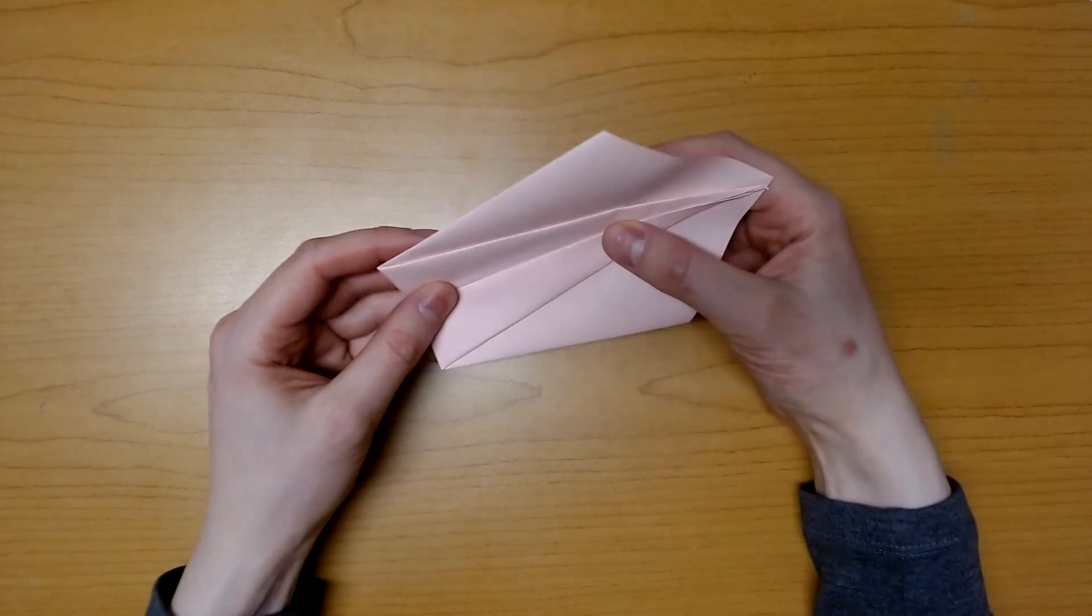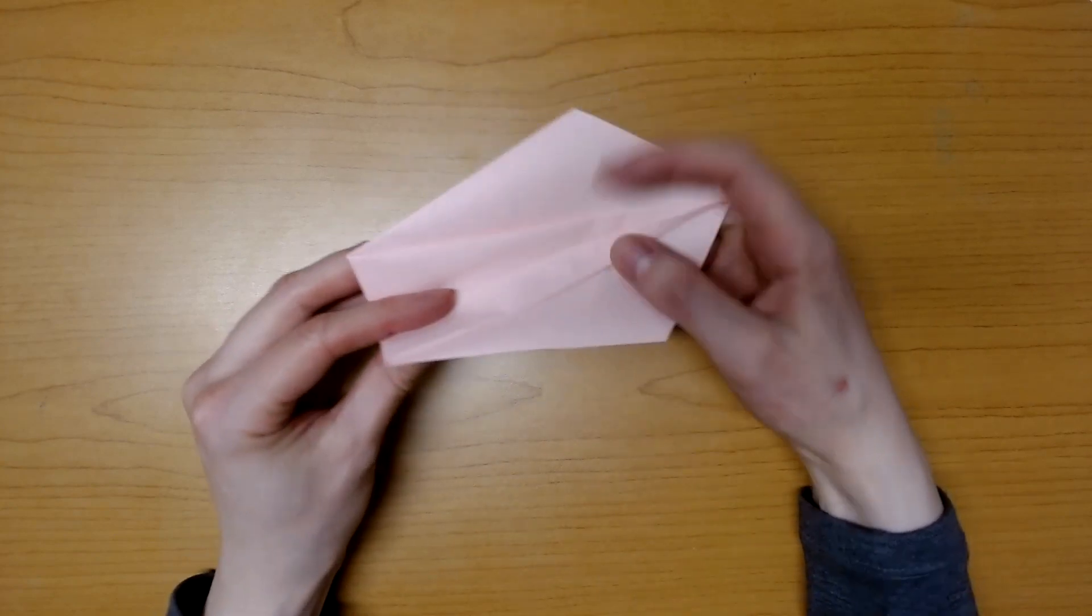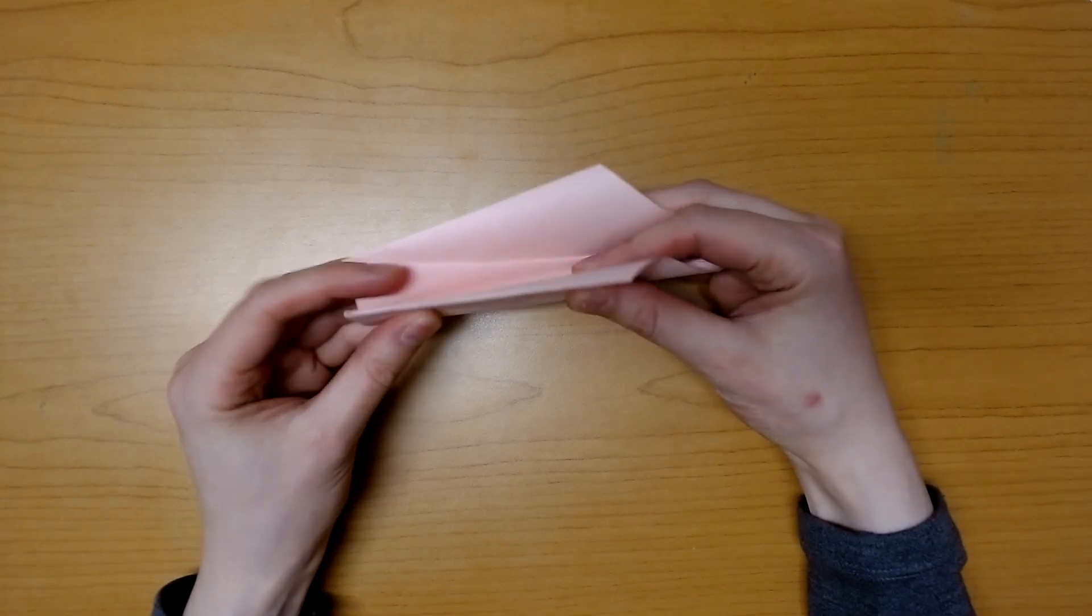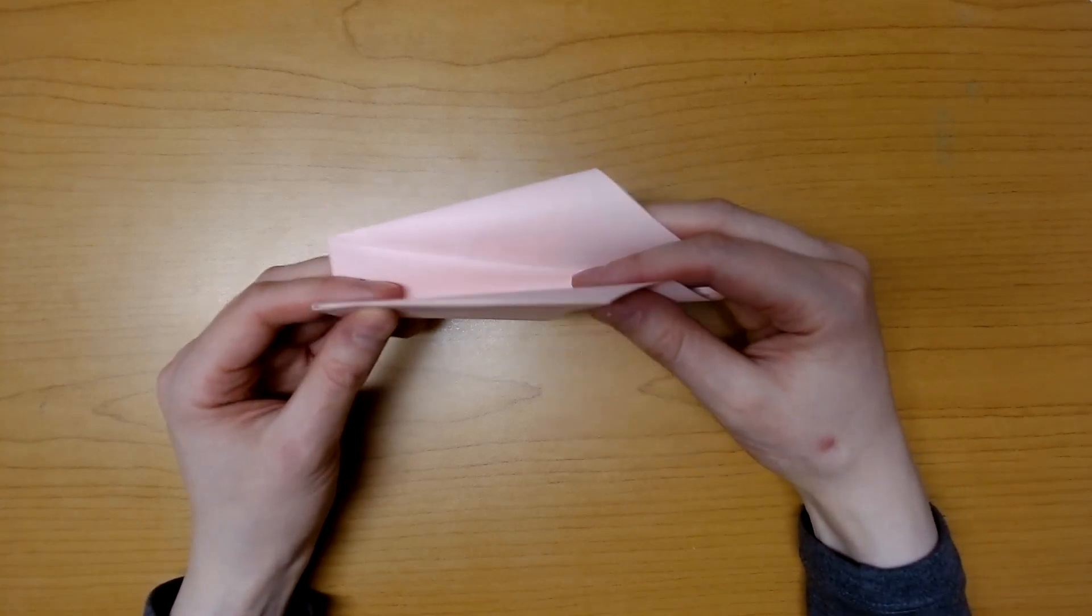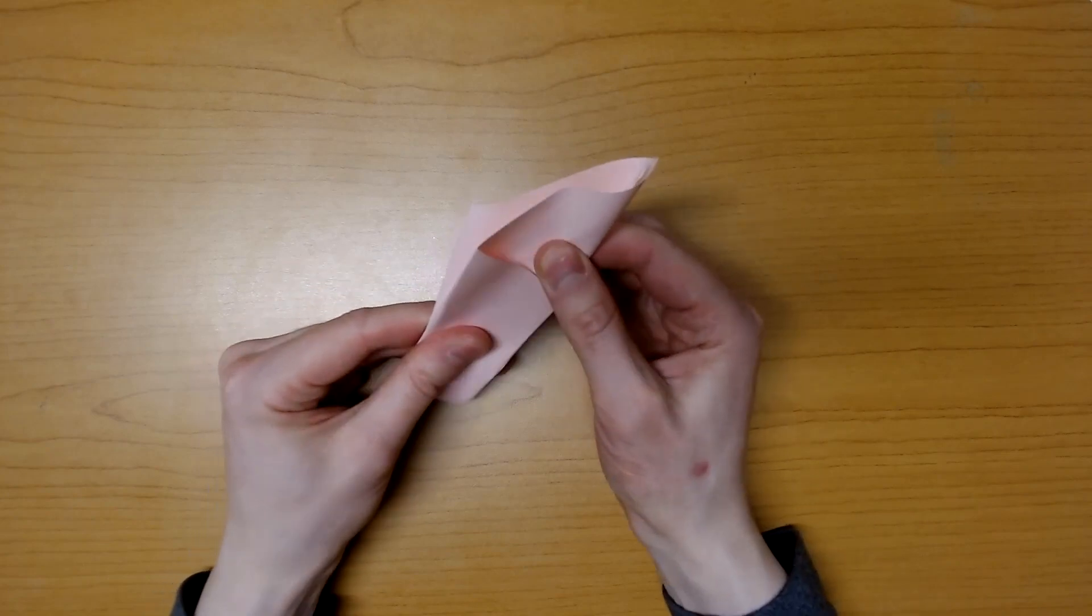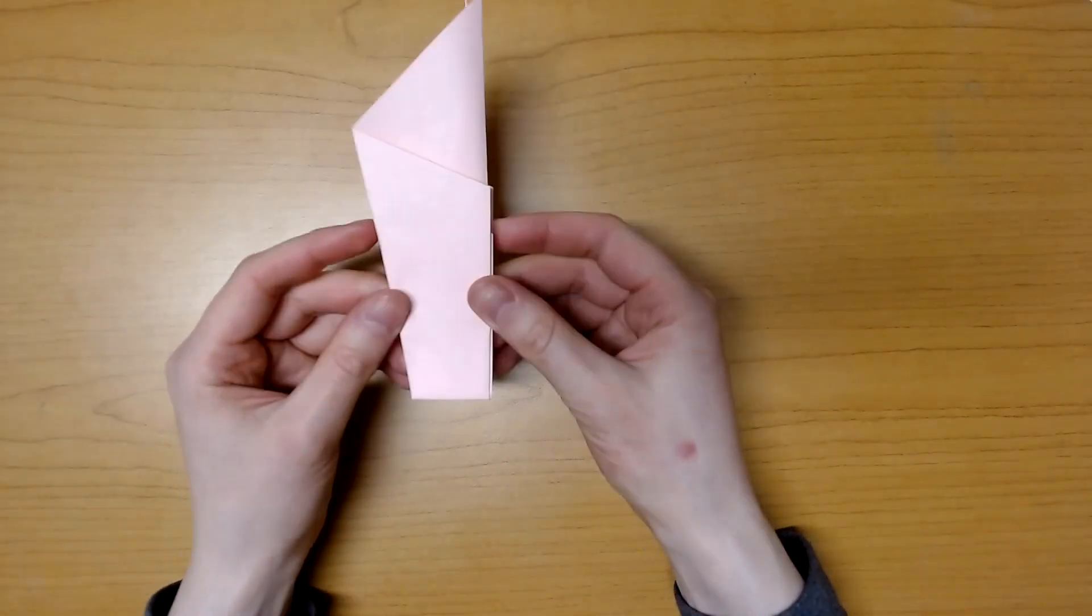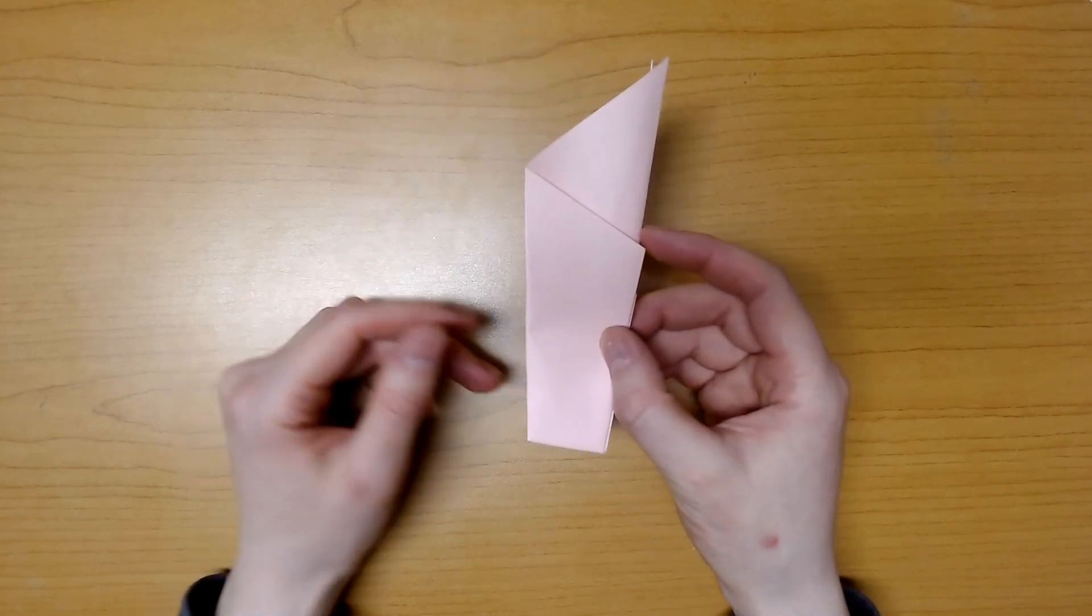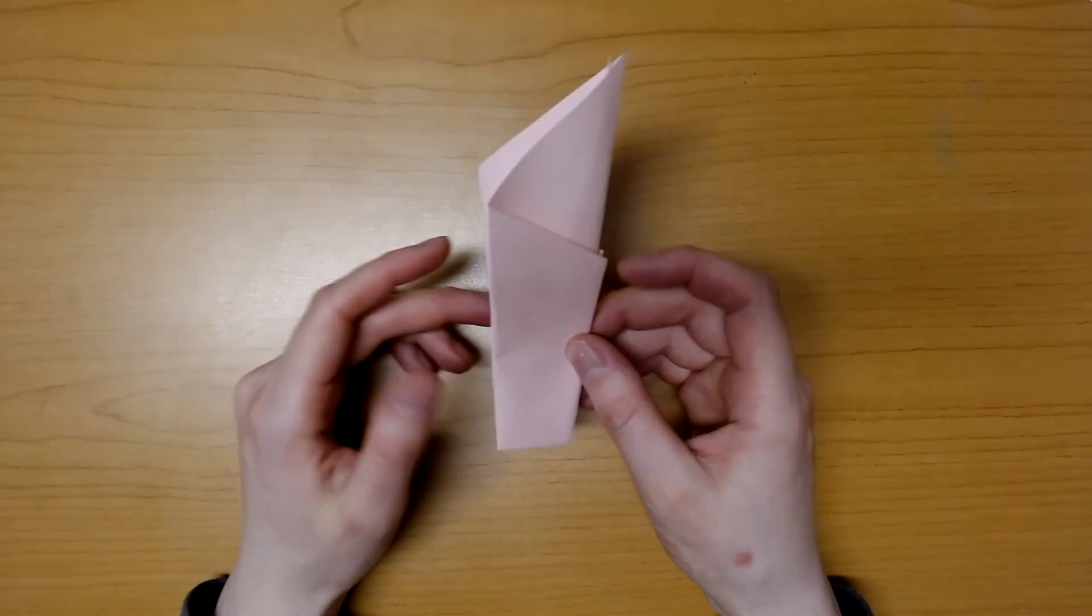Finally, we need to fold this whole thing in half like a hot dog. Just fold it in half just like that. Once you have it folded in half, you will have a shape that looks like this. This is going to be the body of the bird, even if you can't see it quite yet.